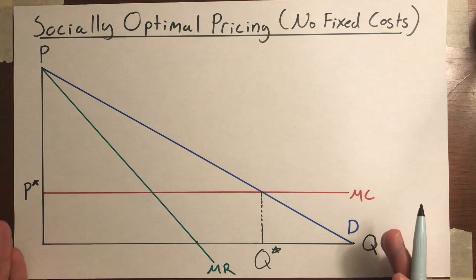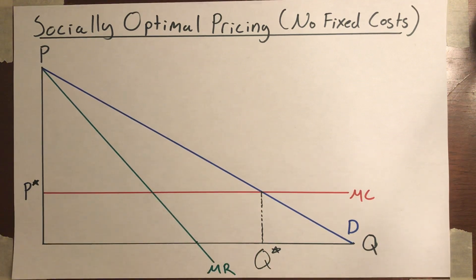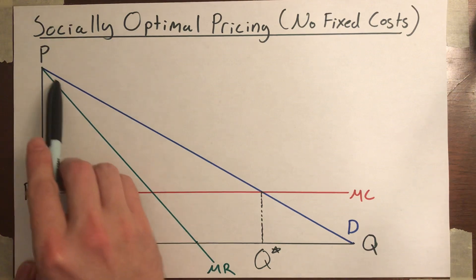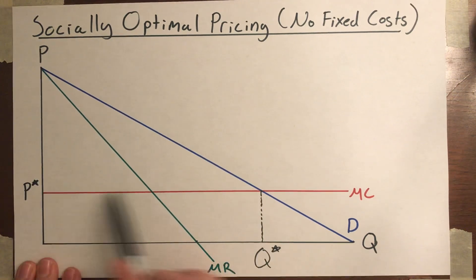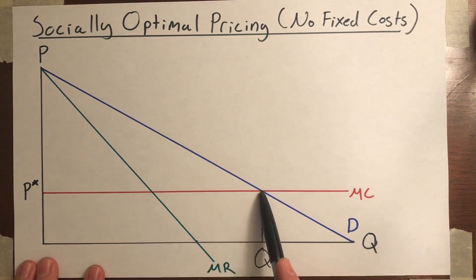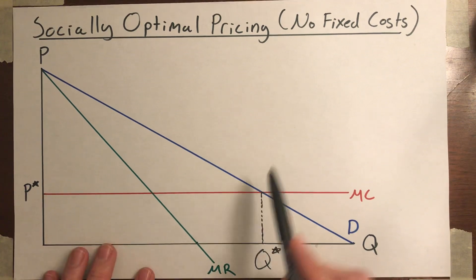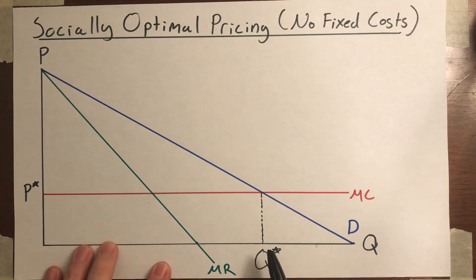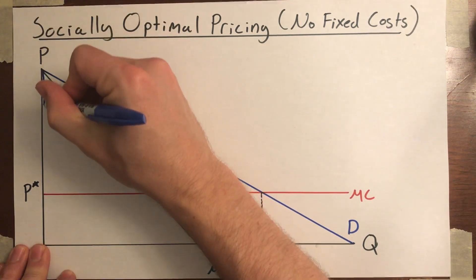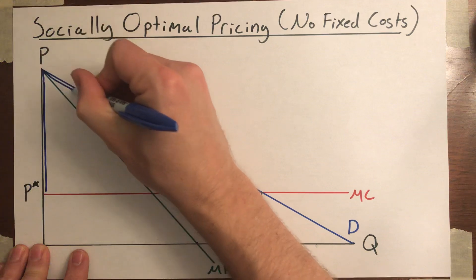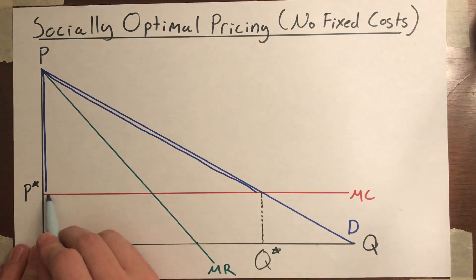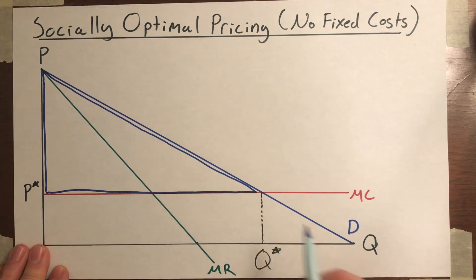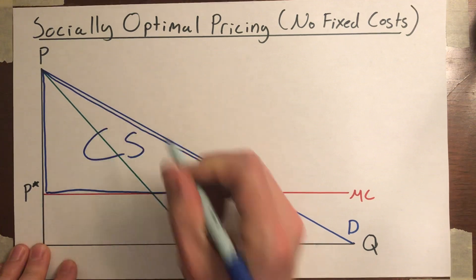If that is what the monopolist would do, that would also maximize the available gains from trade, because consumers would be willing to buy every single one of these units at that price. The price would also be enough to cover the marginal cost of the firm on every unit it's producing, since we're assuming there's no fixed cost. And so we wouldn't get any trades where the cost of production is greater than the value to consumers. All of this area would become consumer surplus — since you're charging a price that's this low, the consumers get everything between the demand curve and the price. That entire area becomes consumer surplus.